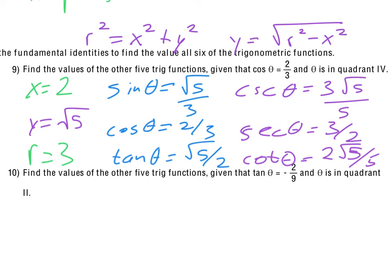Correction: I forgot the signs. Since we are in the fourth quadrant, the y value must be negative — it should be negative square root of 5. So sine, tangent, cosecant, and cotangent all end up being negative because they contain that y value. Cosine and secant do not have y, so they remain positive.